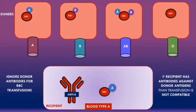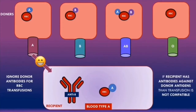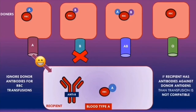If blood type A is transfused into a blood type A patient, the transfusion is compatible because the donor red blood cells do not contain B antigens, so there are no antigens for the anti-B antibodies to react with. If blood type B is transfused, this is not compatible because the donor red blood cells contain B antigens, so the anti-B antibodies will react with them and can cause a hemolytic transfusion reaction.